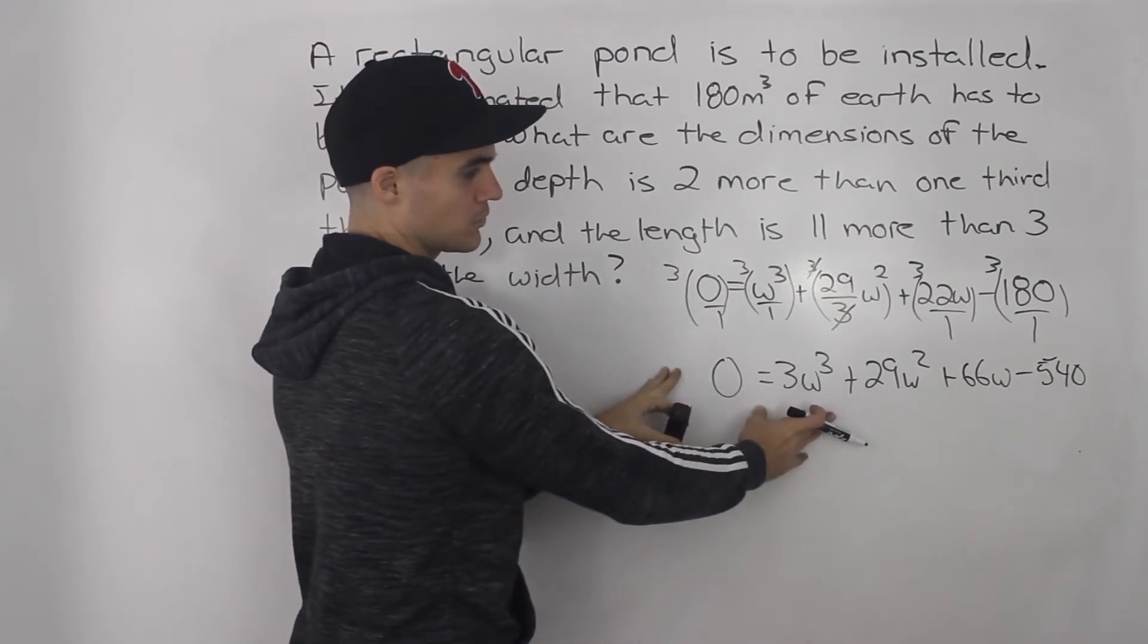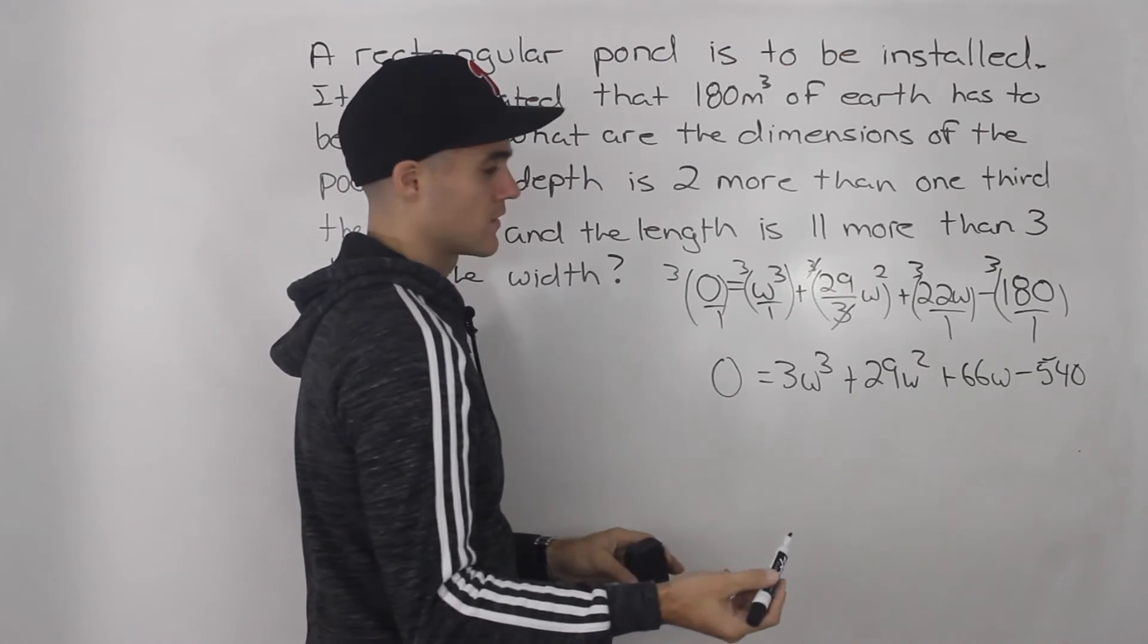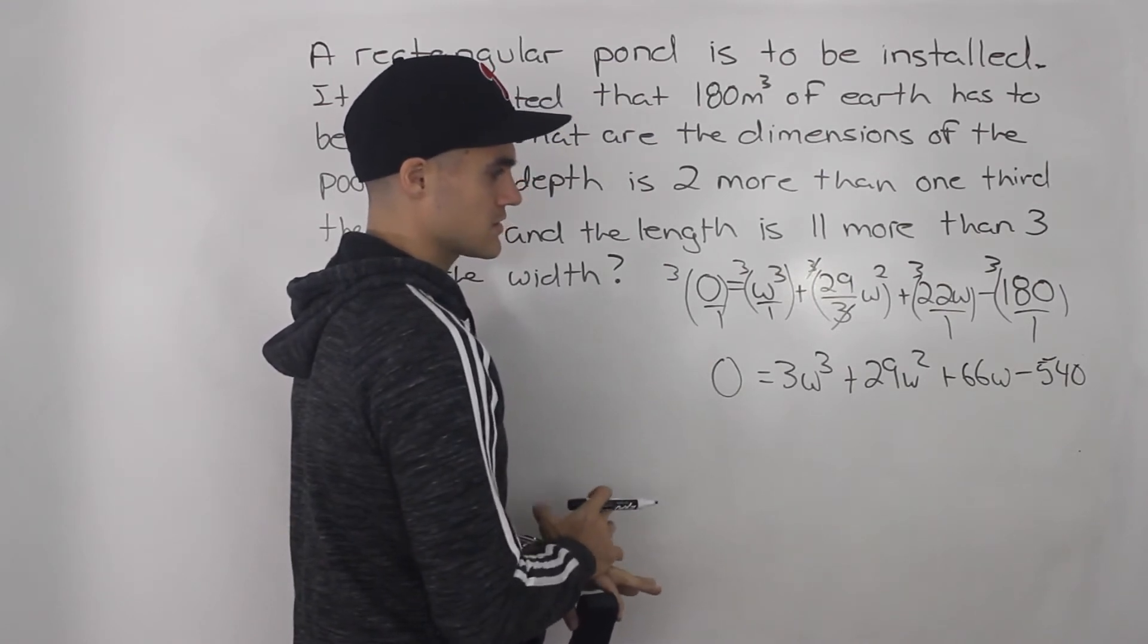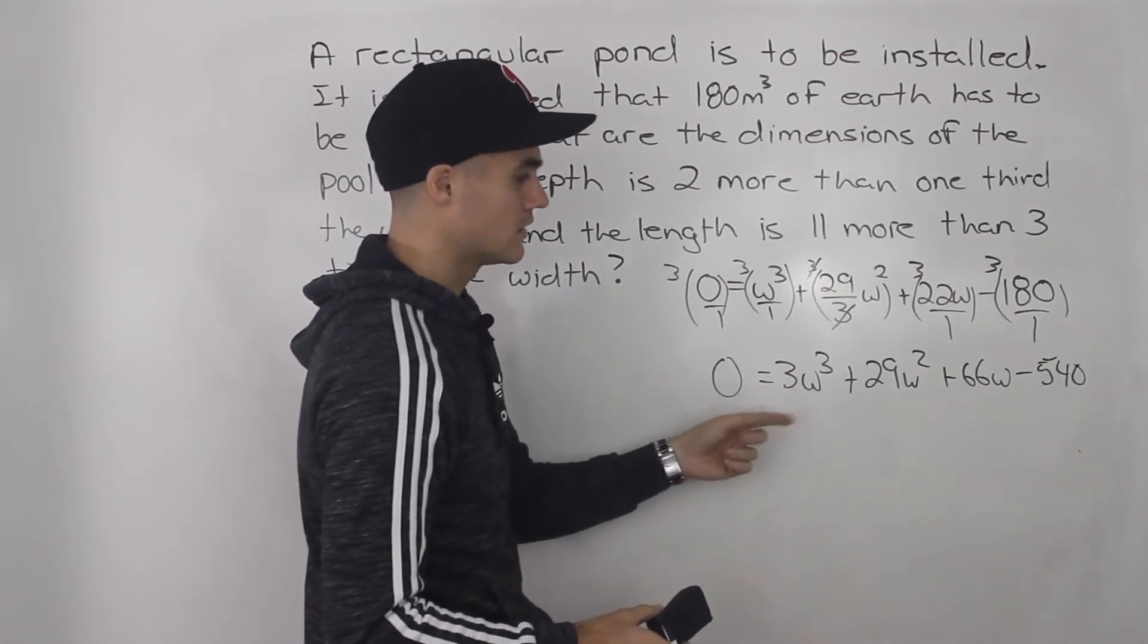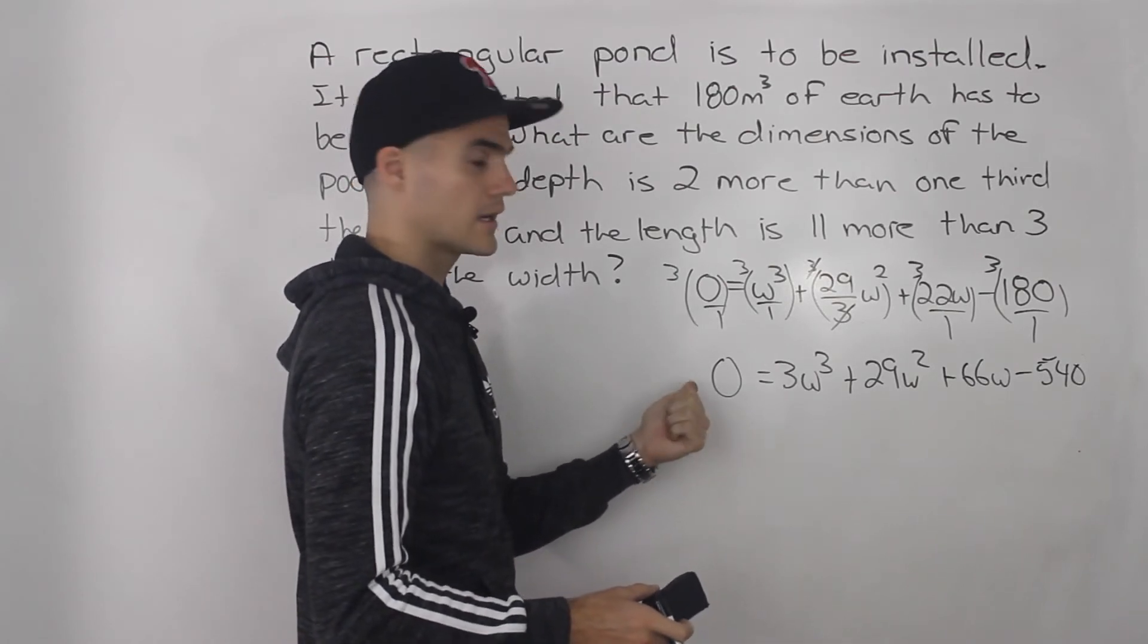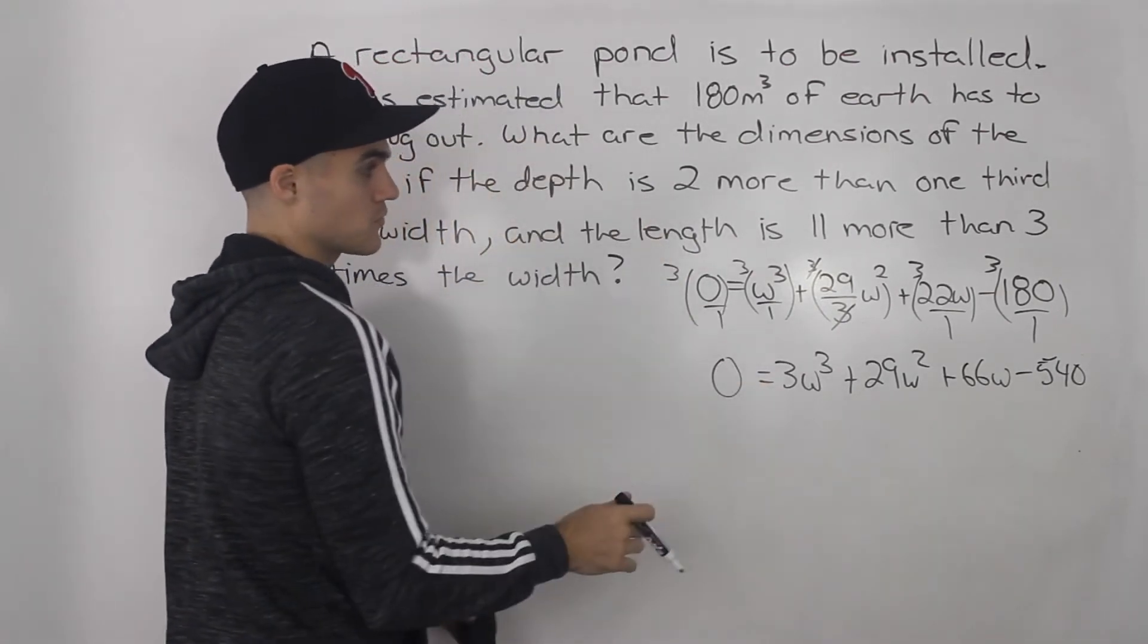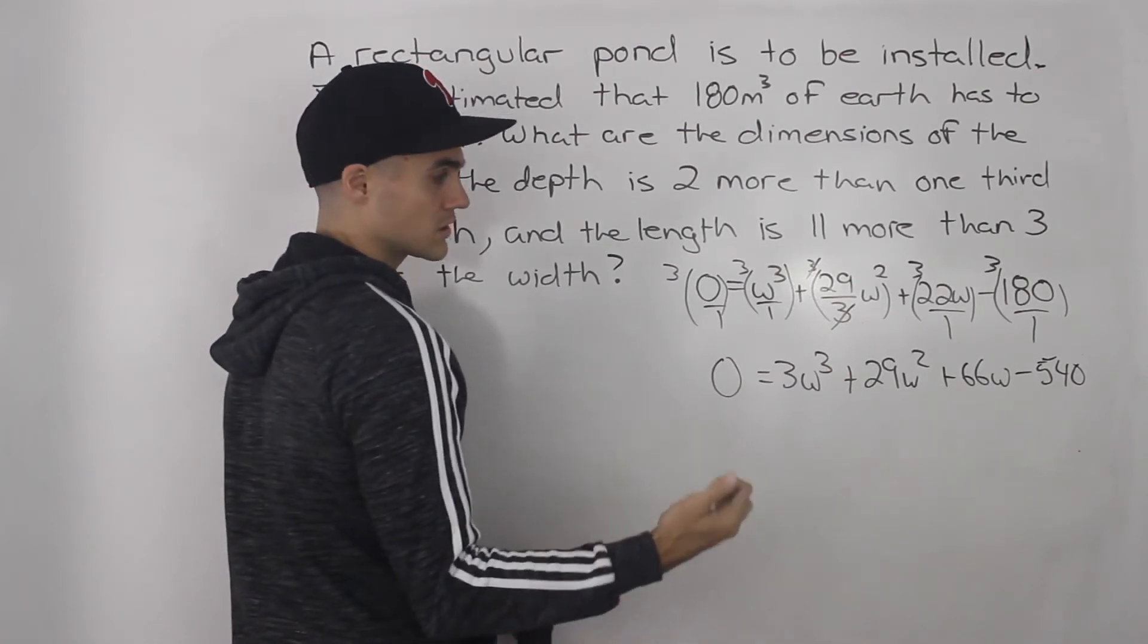And now what we have to do with this polynomial equation is we have to take that right side and factor it. So this is a cubic function you always want to check. Can you factor it by grouping? Grouping won't work, unfortunately. So we're going to have to use the factor theorem. So we're going to have to plug in w values one, two, three. You don't have to worry about the negatives. You don't have to plug in negative one, negative two, negative three, because the width can't be a negative number. So that really helps with these types of word problems when you're factoring these big polynomials. All you have to do is check the positive numbers, one, two, three, etc.